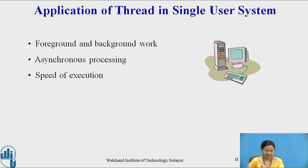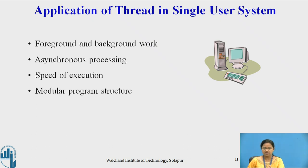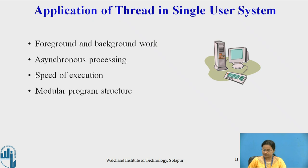Next is speed of execution. In a multi-threaded environment, a process can perform multiple tasks at a time — for example, one thread reads input from the user while another thread handles spell checking — which automatically increases the speed of execution. Next is modular program structure, where programs that involve a variety of activities or a variety of sources and destinations of input and output may be easier to design and implement using threads.